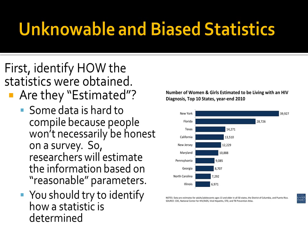At the very bottom in the small type, the notes state: data are estimates for adults and adolescents age 13 and older, in all 50 states, the District of Columbia, and Puerto Rico. The source — and this is the most important part — is the CDC: National Center for HIV, AIDS, Viral Hepatitis, STDs, and TB Prevention. The CDC is the Center for Disease Control in the United States, and their job is to compile statistics on things like HIV, hepatitis, sexually transmitted diseases, and tuberculosis.